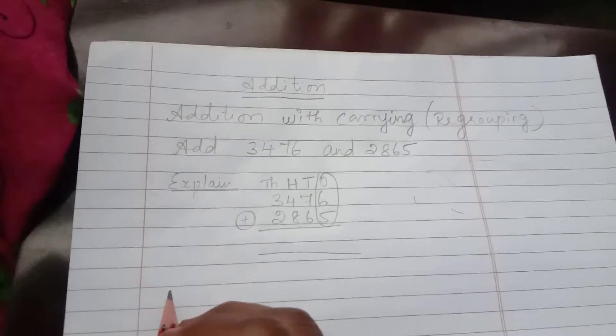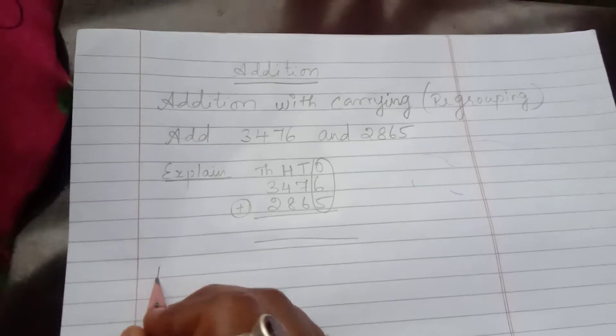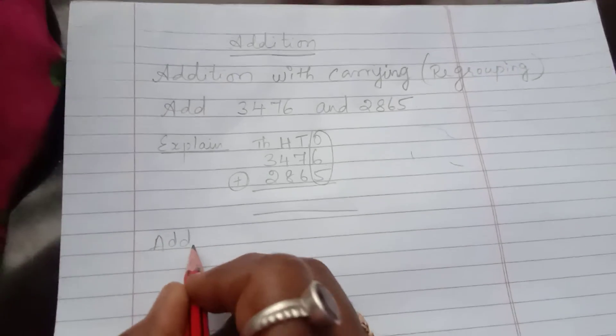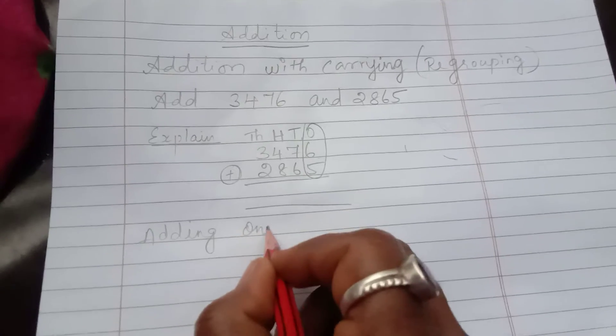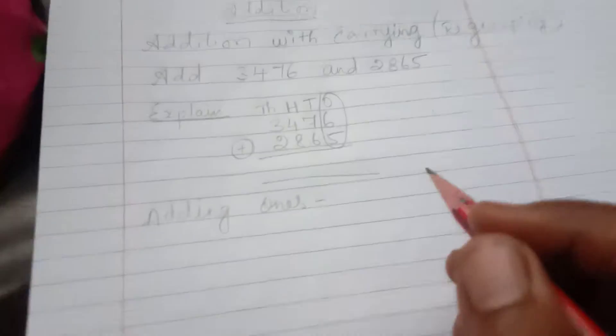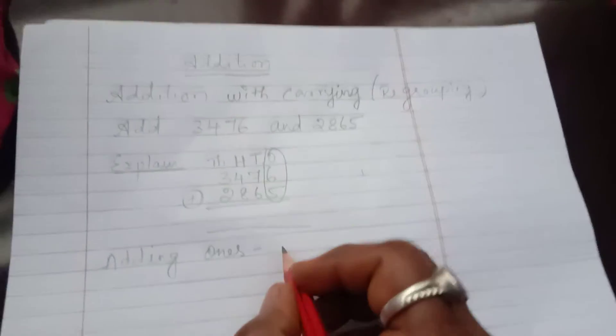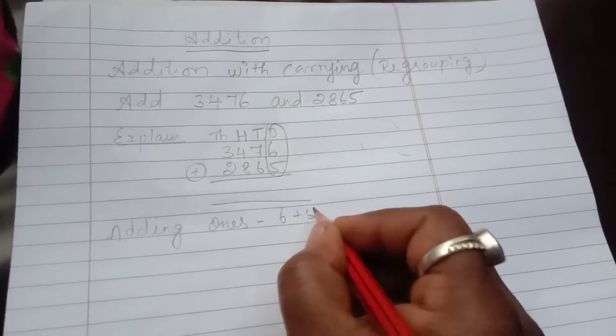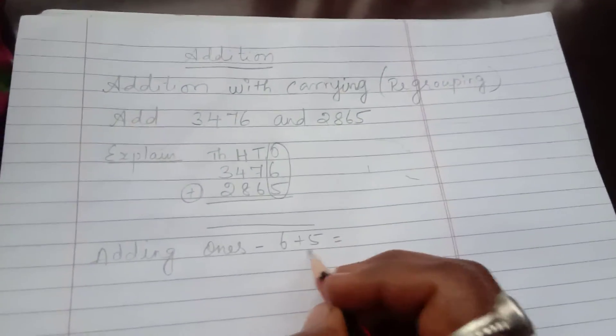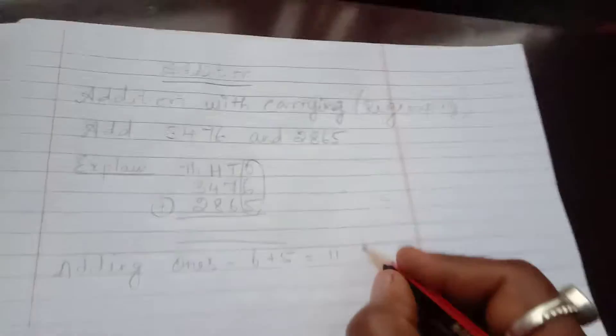In ones place, what number is written there? Adding ones. Yes ma'am. Ma'am, what means carrying? I will explain each. First you listen. 6 plus 5, you know 6 plus 5 is 11. This is in ones column.